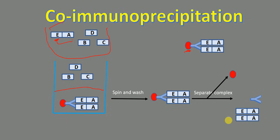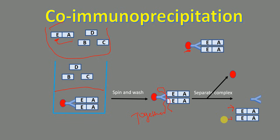This technique is called co-immunoprecipitation because 'co' means together, and immunoprecipitation means precipitation using an antibody. When we used the antibody against protein E, it precipitated protein A together with protein E, because they are present as an interacting complex. In immunoprecipitation only one protein is precipitated, whereas in co-immunoprecipitation two or more interacting proteins are precipitated together.